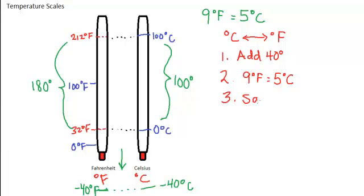And then step number three is to subtract 40 degrees to essentially undo what we did in the first step, but to get us back to our zero point.